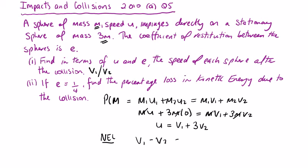With Newton's experimental law we can get another equation with v1 and v2. v1 - v2 = -e*(u1 - u2), which is -e*(u - 0), so v1 - v2 = -eu.